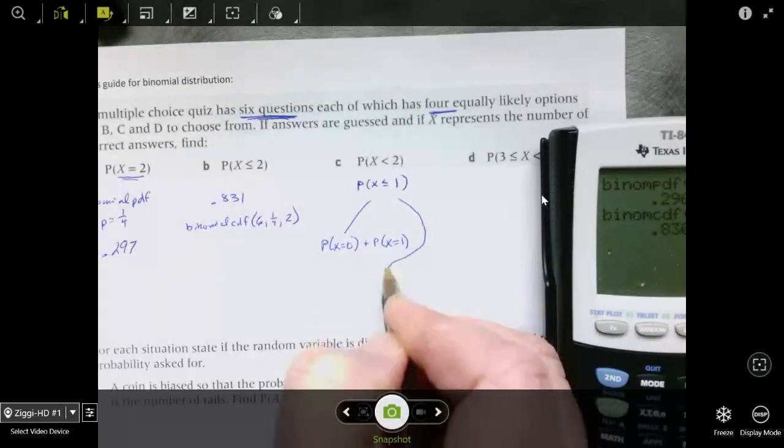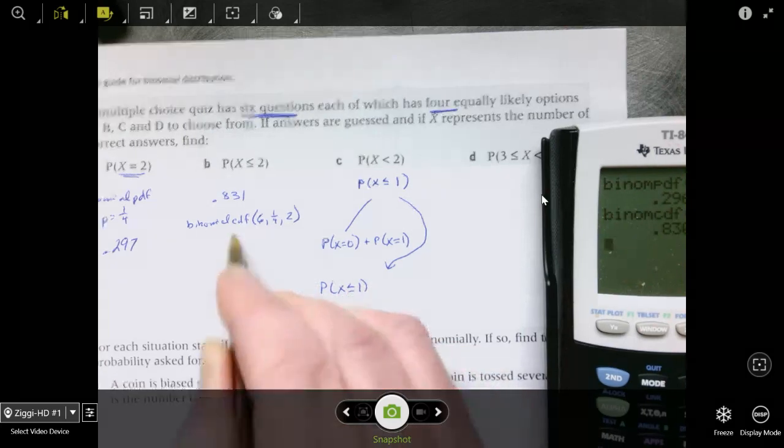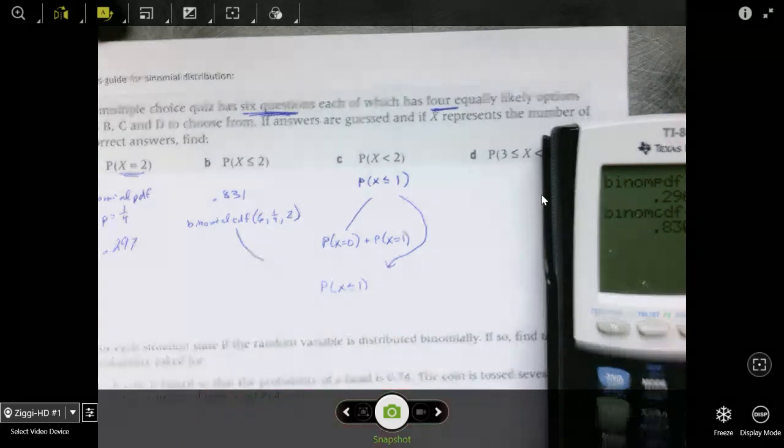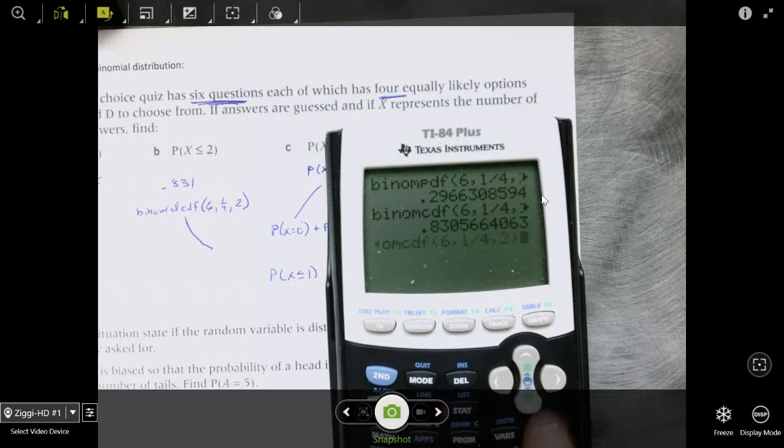I'm going to show you a little something here in your calculator that will save you some time. If you hit second, enter, it just pops back up what you had before. And since we're doing the same problem, I can just change the 2 to a 1. So that's going to give me the probability that x is less than or equal to 1, which is 0.534.